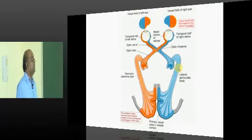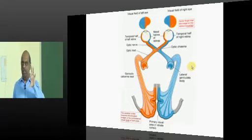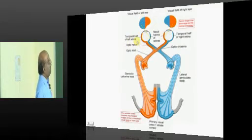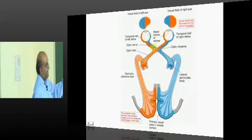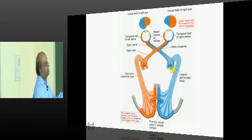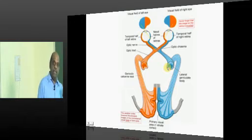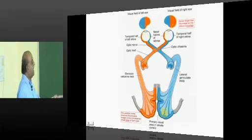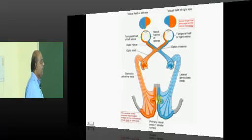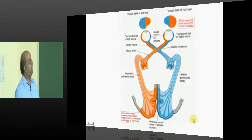Let us quickly review the visual pathway. You have a temporal half and a nasal half of the retina. There is a decussation at the level of the optic chiasma, and all fibers reach the lateral geniculate body, which is important for vision. The medial geniculate body is associated with audition. From the lateral geniculate body, the geniculocalcarine tract takes fibers to the primary visual area located in the striate cortex of the occipital lobe.